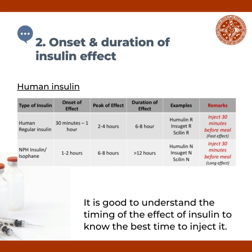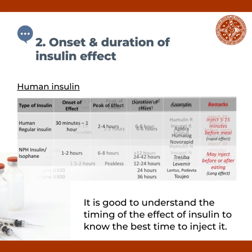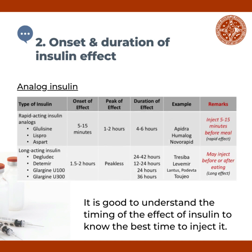For NPH insulin or isophane, the onset of effect is 1 to 2 hours, the peak effect is 6 to 8 hours, and the duration of effect is more than 12 hours. Examples of NPH and isophane insulins are Humulin N, Insulatard N, and Scilin N. These are also injected 30 minutes before meals. It is important to understand the timing of the effect of insulin to know the best time to inject it.